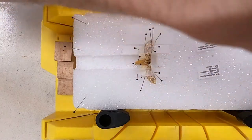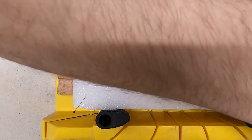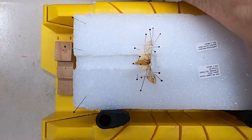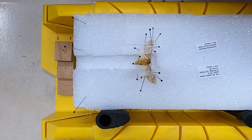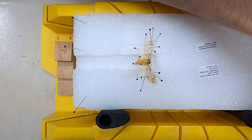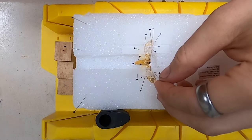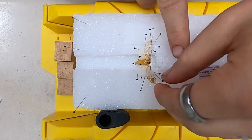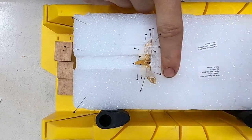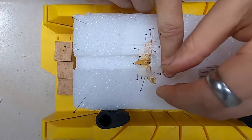The insect has dried for 48 hours and you need to carefully remove all the pins so that you do not damage the insect. Insects are incredibly fragile after they have been dried, so you need to be very careful.